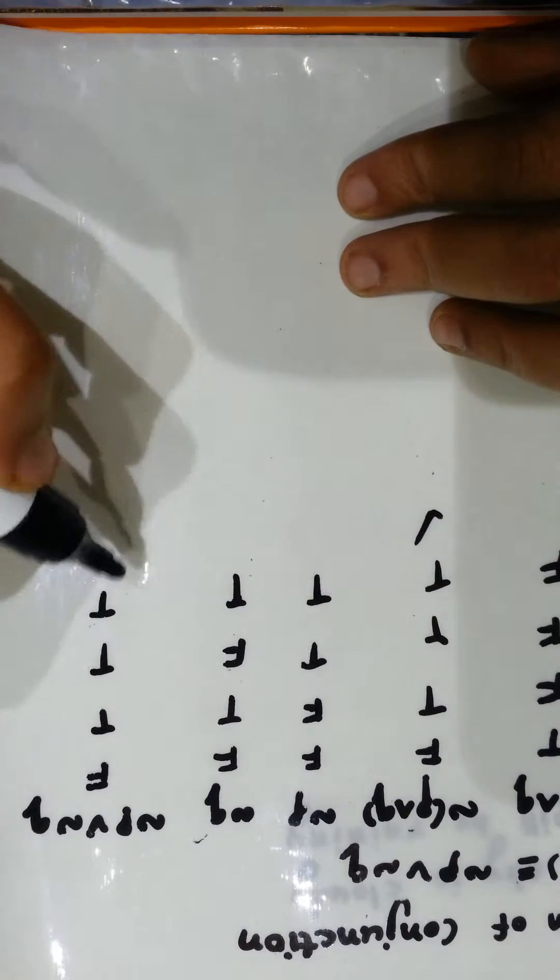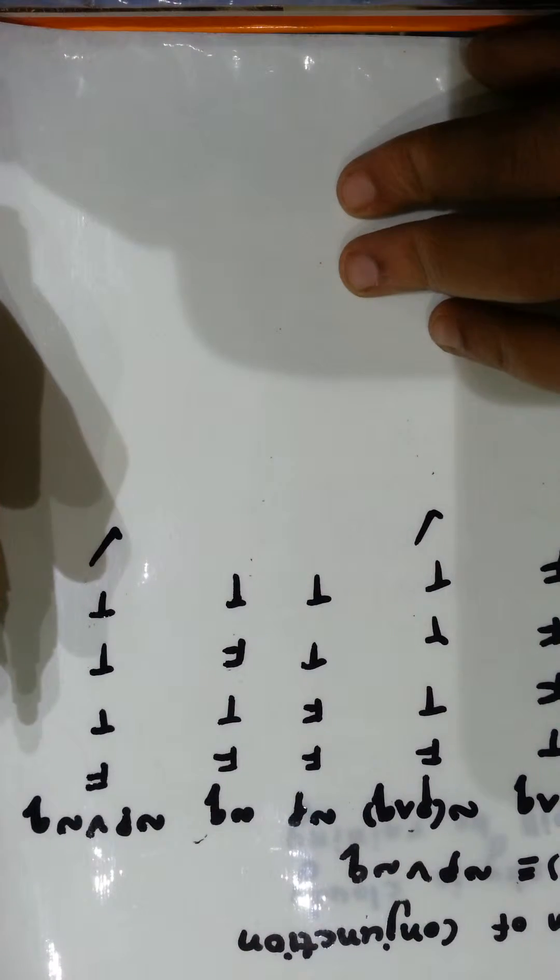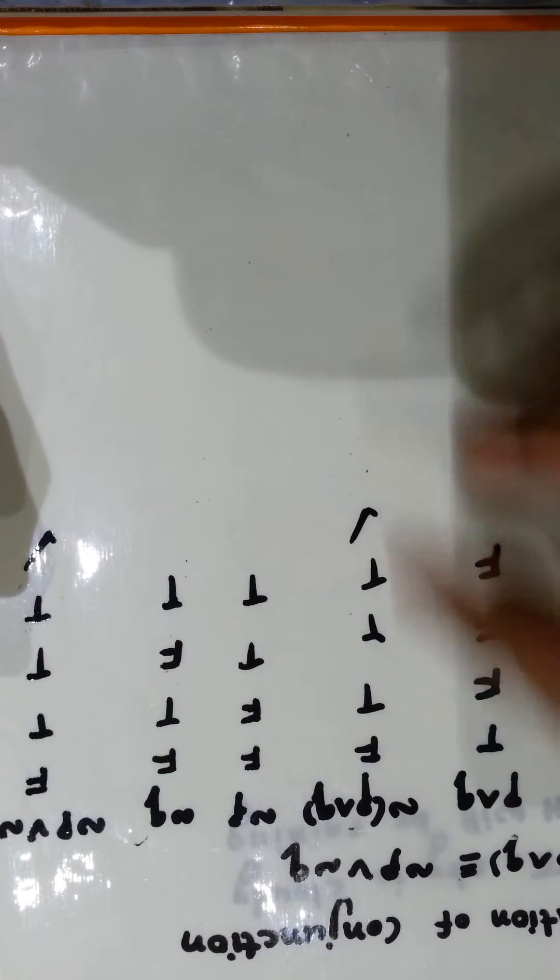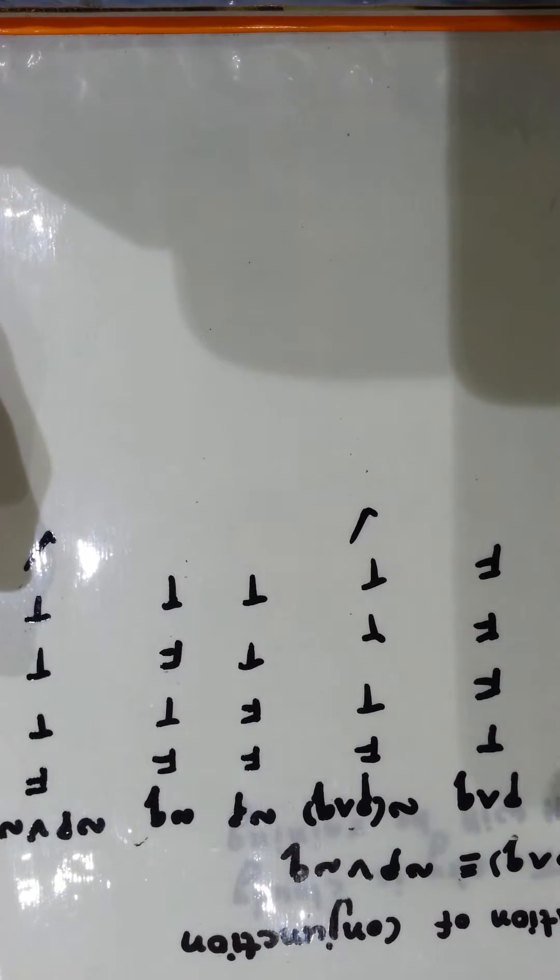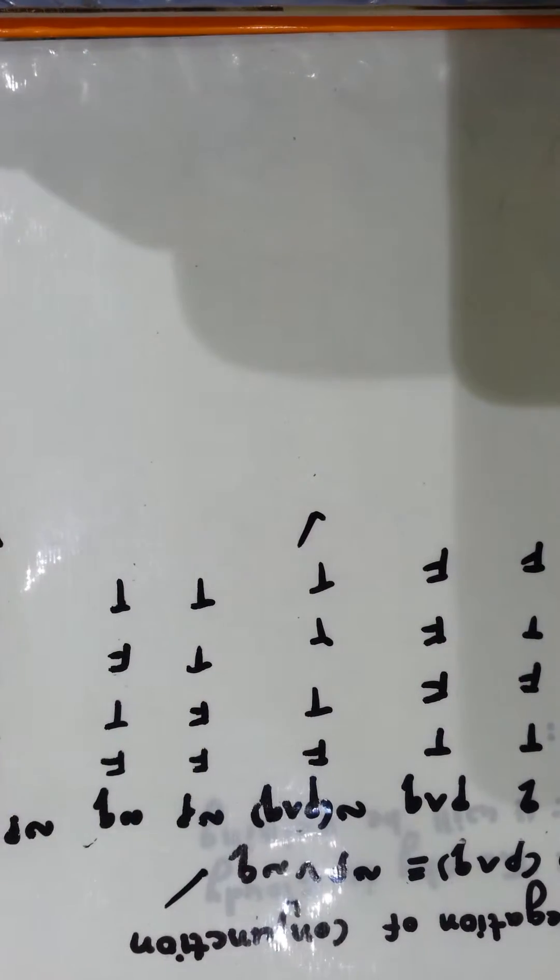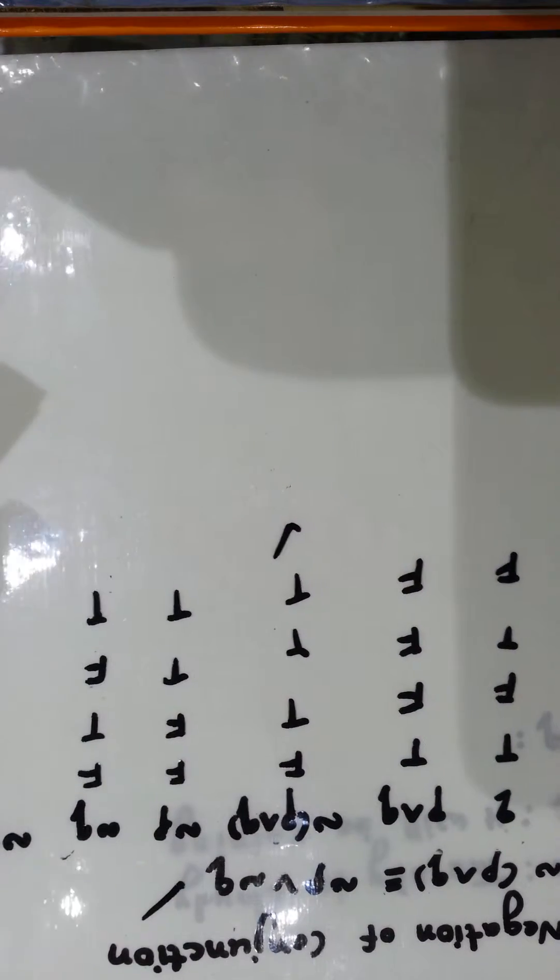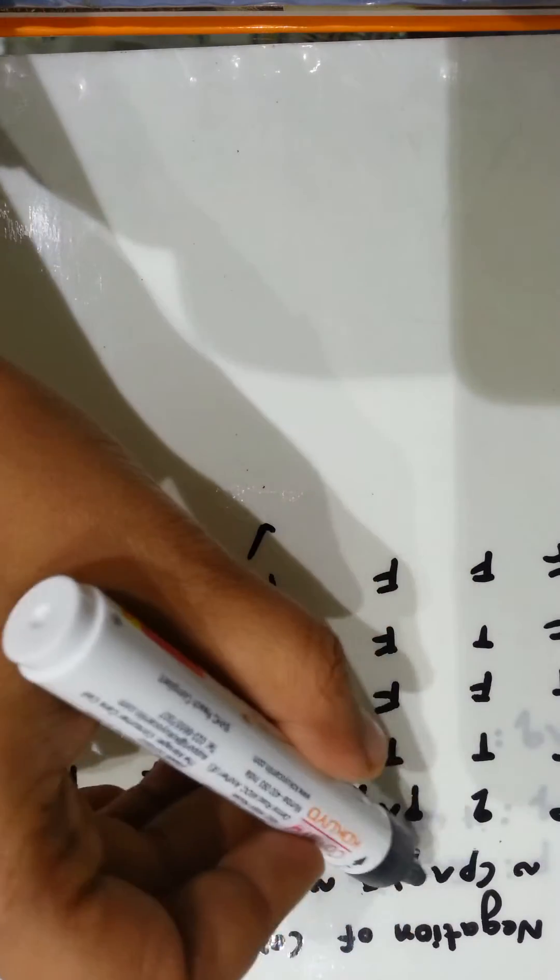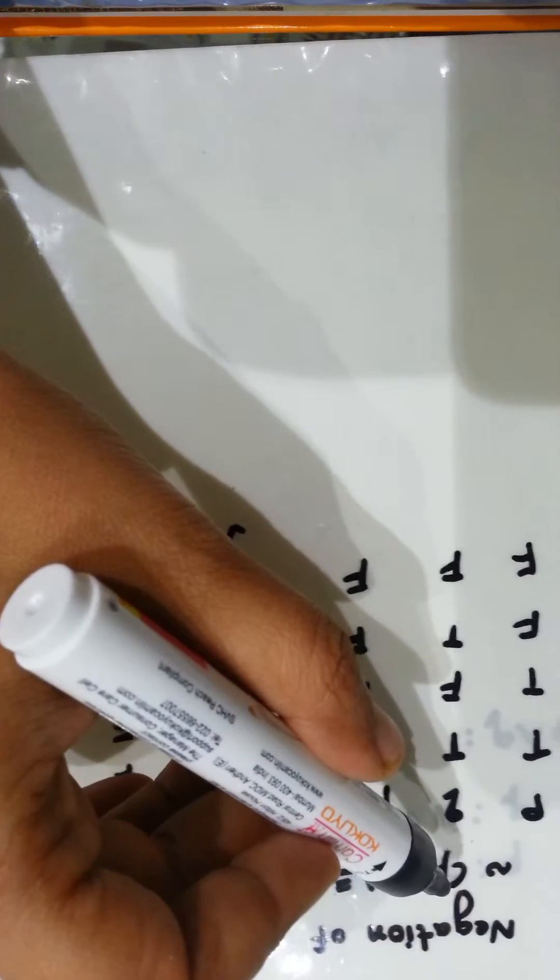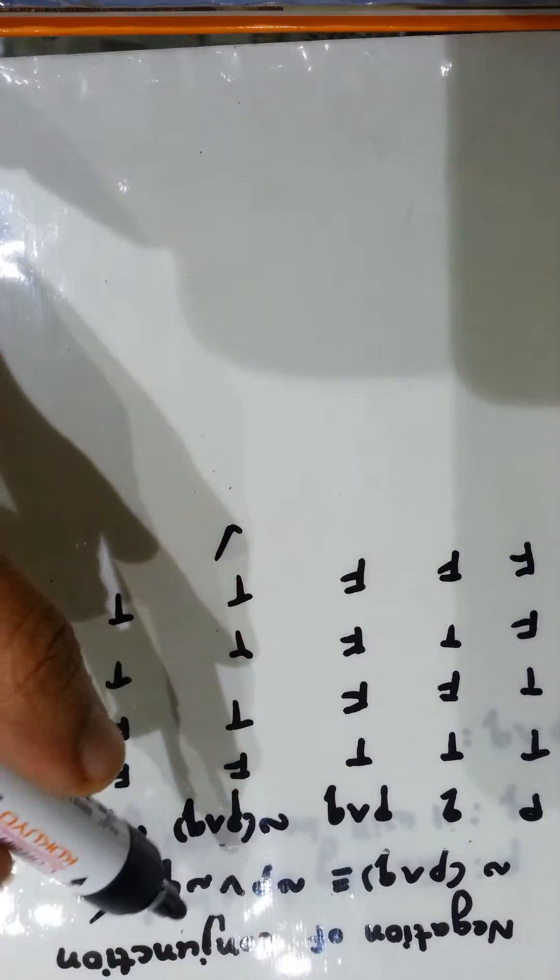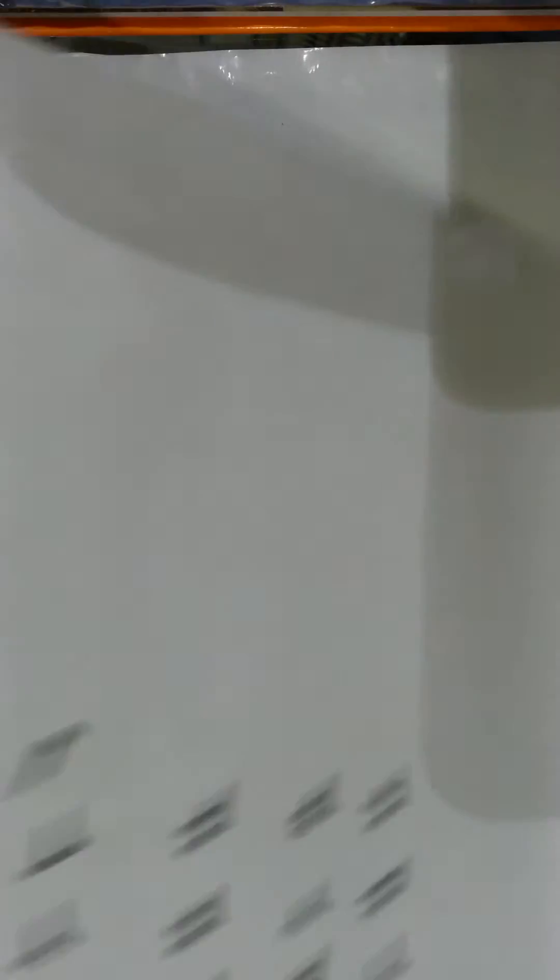So now we have to compare this column and this column. So here we can say both are same: FTTT. So this is logically equivalent and negation of conjunction is proved. For that you have to remember this—negation of P and Q is same as negation P or negation Q.